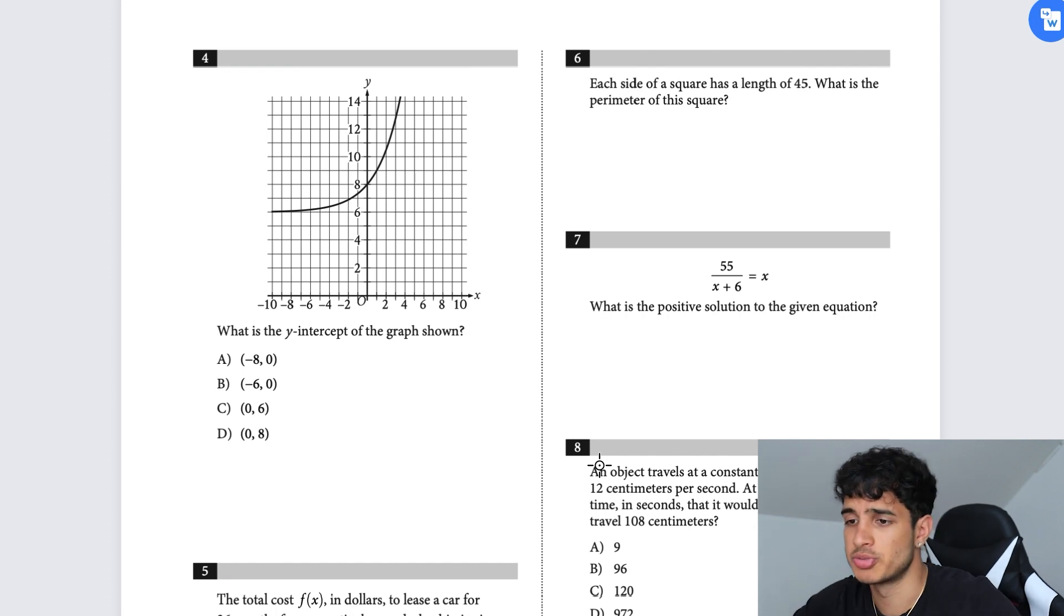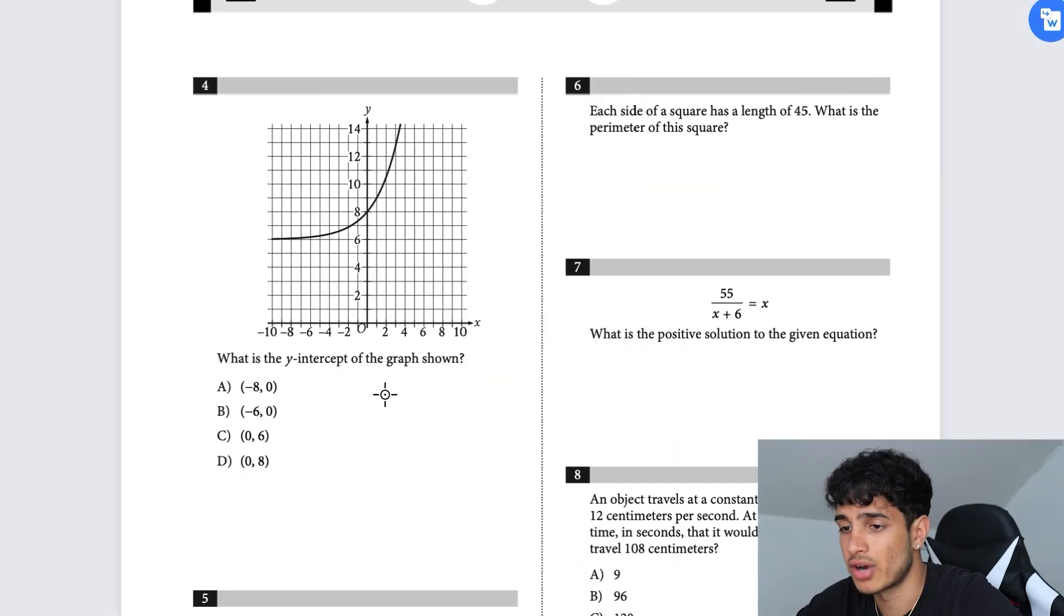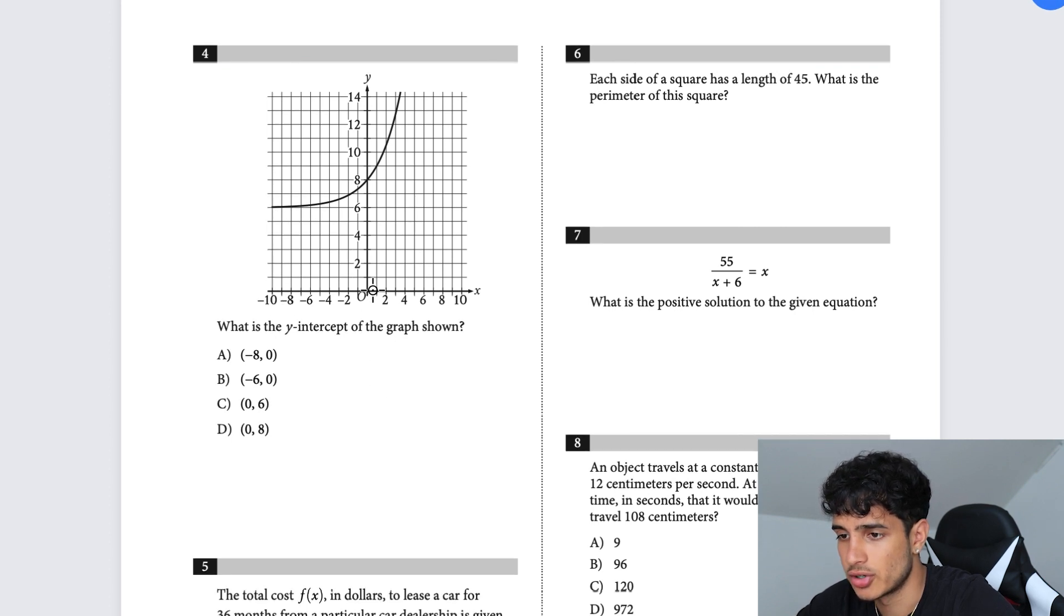What is the y-intercept of the graph shown? Okay, we have zero, eight. That's pretty easy.